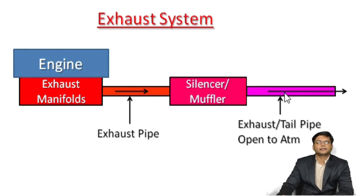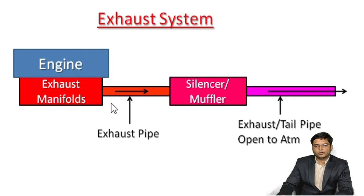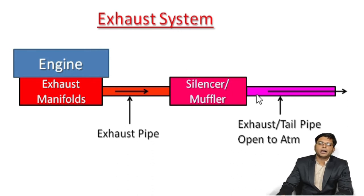Now we will see the exhaust system. After the combustion process, exhaust gases are produced and must be removed from the combustion chamber. From the engine, from the exhaust valve, these exhaust gases pass via the exhaust manifold to the exhaust pipe. Then they go through the silencer, also called a muffler, where the noise is reduced. Through this muffler, from the tail pipe, the gases escape out to the atmosphere.